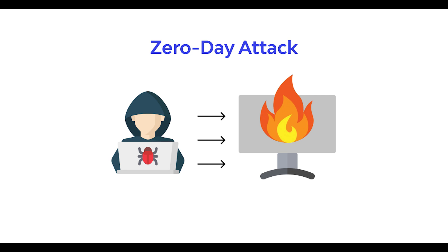Some examples of popular zero day attacks are the Chrome zero day from 2021, where vulnerabilities stemmed from a bug in the V8 JavaScript engine, and Apple iOS in 2020 with remote attacks. Keeping only essential applications, using a firewall, updating software as quickly as possible, and using comprehensive tools are the only ways to protect against zero day attacks.